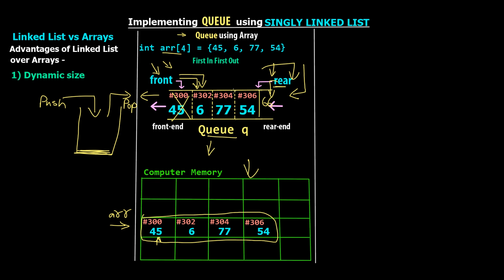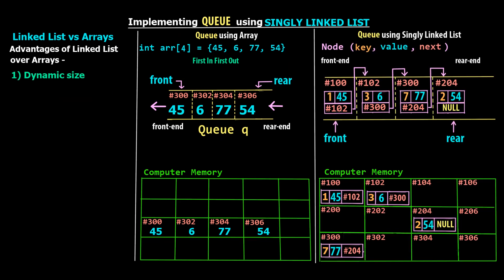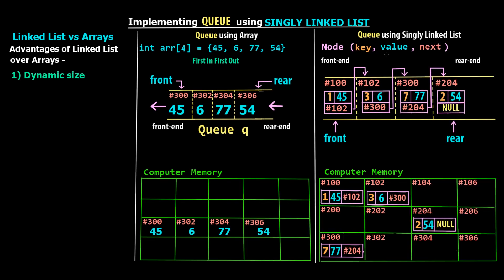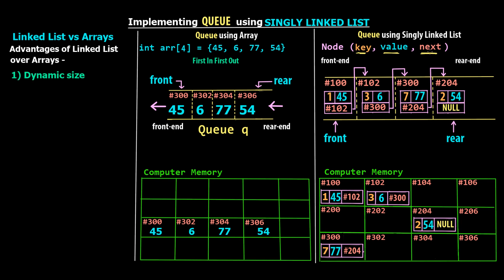On the right hand side we have queue using singly linked list. I'm assuming you already know what is a linked list, what is singly linked list, what is doubly linked list — all these topics are separately covered in this DSA course. In this diagram, you can see we have a queue, but inside the queue we do not have simple array elements. We have nodes. In a linked list, the elements that are stored are called nodes. The node will have a key, its value, and a pointer which points to the next node.